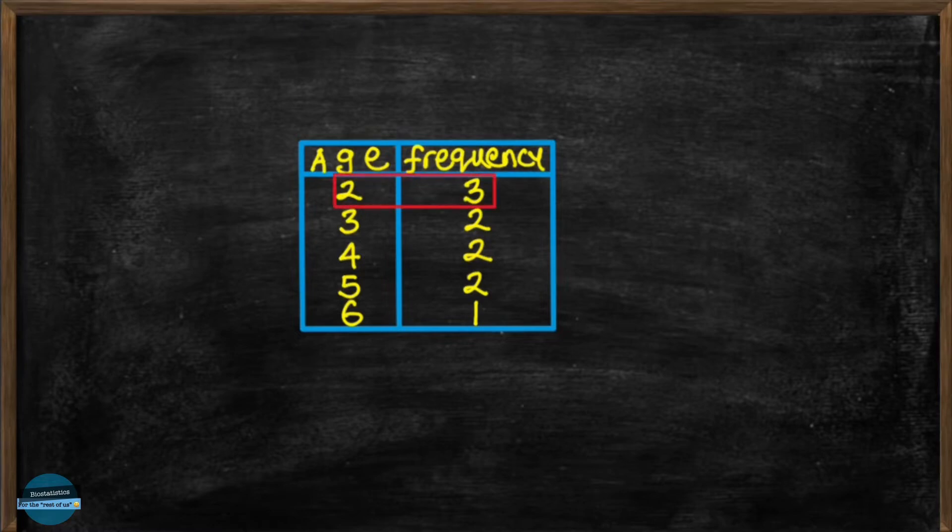alright? And for the age 3 years old, there were 2 children, 4 years old, there were 2 children, and so on.